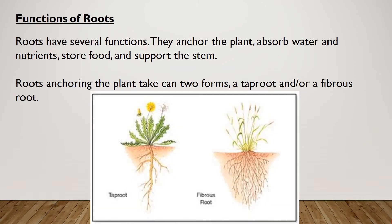Roots have several functions. They anchor the plant, absorb water and nutrients, store food, and support the stem. Roots anchoring the plant can take two forms: a tap root and/or a fibrous root. The tap root has a main leader root that reaches down deep into the soil, and the fibrous root has more branching shallow roots.